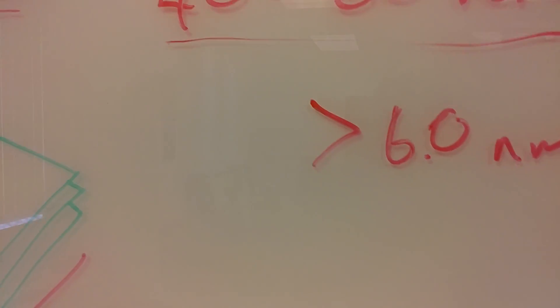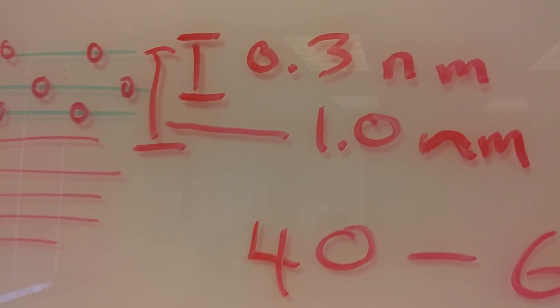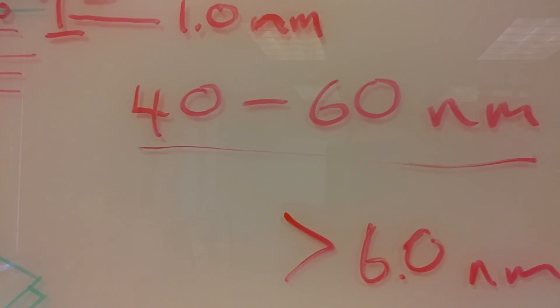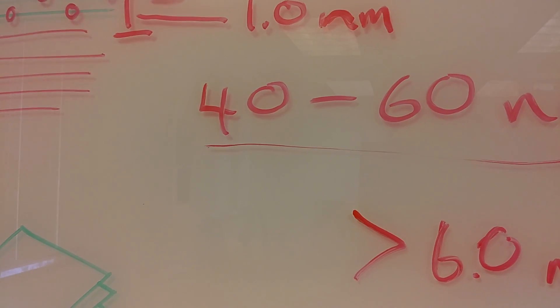You can get some GO that's down there in this range too, I know that. But whenever you reduce it, a lot of times it goes back to that 40 to 60 because you're reintroducing the flakes back together.